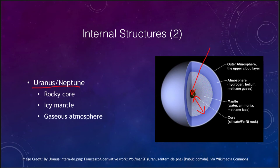Again, the structure is very similar across Uranus and Neptune: you have something more massive than the Earth at the center, compressed down and made primarily of rock, then an icy mantle around that, and then the outer atmosphere layers.